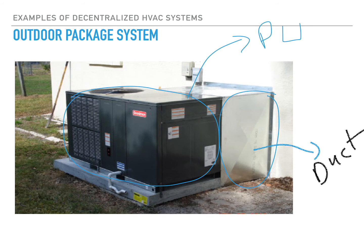The final example of a decentralized HVAC system is the outdoor package system. From the name 'package,' it means everything is packaged in one unit — one box — with all components: compressor, evaporator, condenser, and expansion valve all present in one place, shown here as the dark gray box. It has all components of the refrigeration cycle, and then cold air is simply blown towards the space through a ducting system. The bright aluminum part of the picture is the duct connected to the package unit, which distributes cold air to the required space or zone.